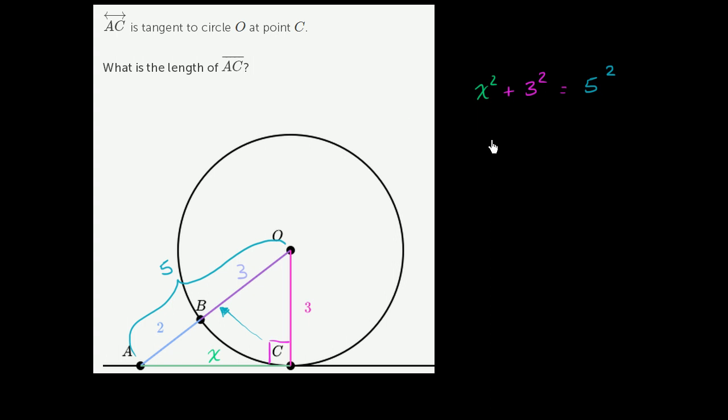So x squared plus nine is equal to 25. Subtract nine from both sides and you get x squared is equal to 16. And so it should jump out at you that x is equal to four. So x is the same thing as the length of segment AC, which means the length of segment AC is four.